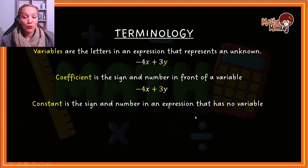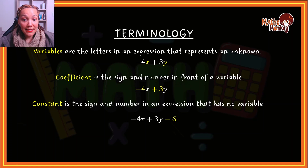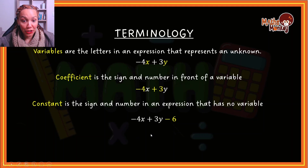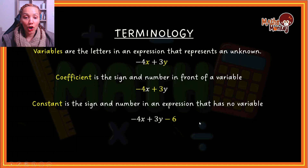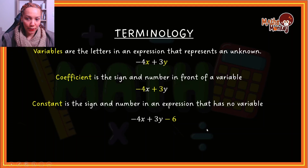Sometimes we have a situation in an expression where we have a number that stands alone, not attached to a specific variable, and that is called a constant. A constant is the number and the sign that is not attached to a variable. So if you look at this expression, the constant in this expression is negative 6. Later on, once we start doing calculations with algebra, I'll give you more detail on why it's called a constant — it means remaining the same. We'll get to that in a later video.